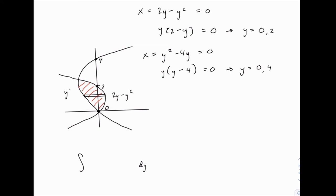And remember, the one on the left is y squared minus 4y. So the rightmost function on the region we're looking for is 2y minus y squared. And the left function is the y squared minus 4y. So that's what the integral will look like. We subtract the larger function minus the smaller function. The only thing that's left is to find the limits of integration.